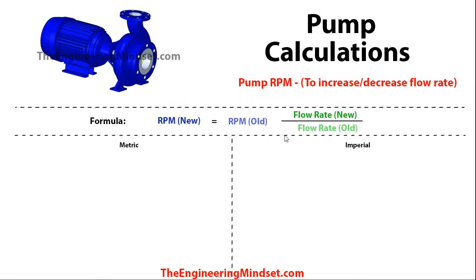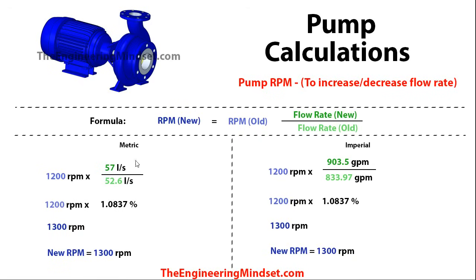The next one we'll look at is the pump RPM — revolutions per minute. So if we were to increase or decrease the flow rate, what RPM would we need to achieve that? We use this formula: the new RPM equals the old RPM multiplied by the new flow rate divided by the original flow rate. The two units of measurement cancel out, leaving you with a ratio or percent. Multiplying these out together brings you to 1,300 RPM — the speed the impeller needs to rotate at to achieve this new flow rate.